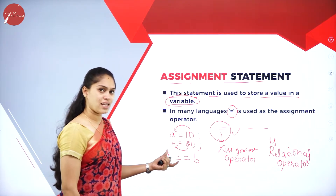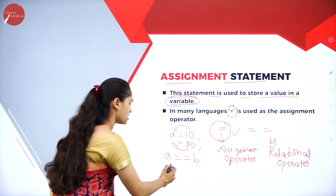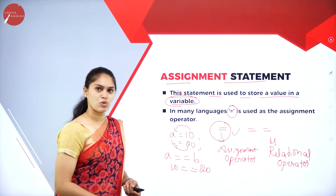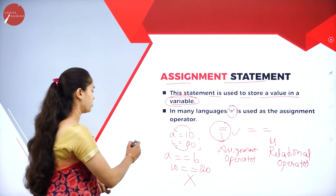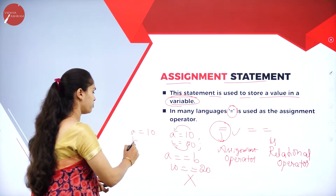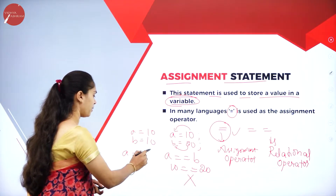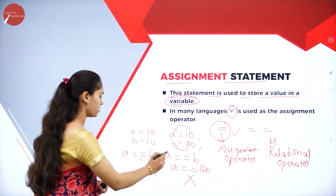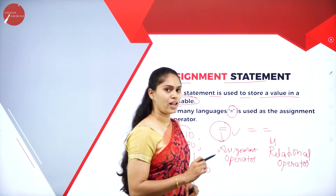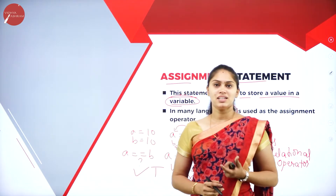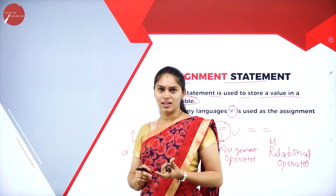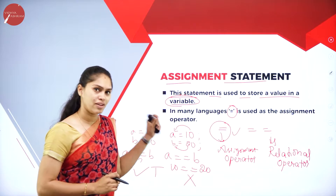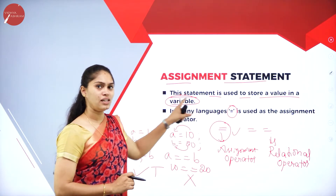In summary, the sequential construct consists of input statements, assignment statements, and output statements executed one after another. Next is the selection construct — it allows the programmer to select a path based on a condition. It is also called a conditional construct. If the condition is true, one path is followed; if false, another path is taken.